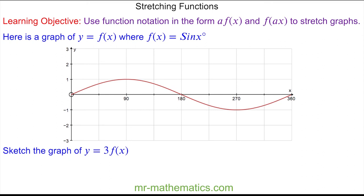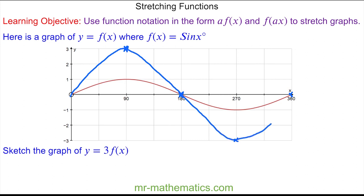Do you want to try and sketch what you think 3 f of x will look like? You can pause the video and resume it when you're ready. When x is equal to 90, f of x is 1, so we multiply by 3 to get the point at 90 and 3. At 180 we multiply 0 by 3 to make 0. At 270 we'll have negative 3, and at 360 we'll have 0. So again we have a vertical stretch with the x values remaining the same.